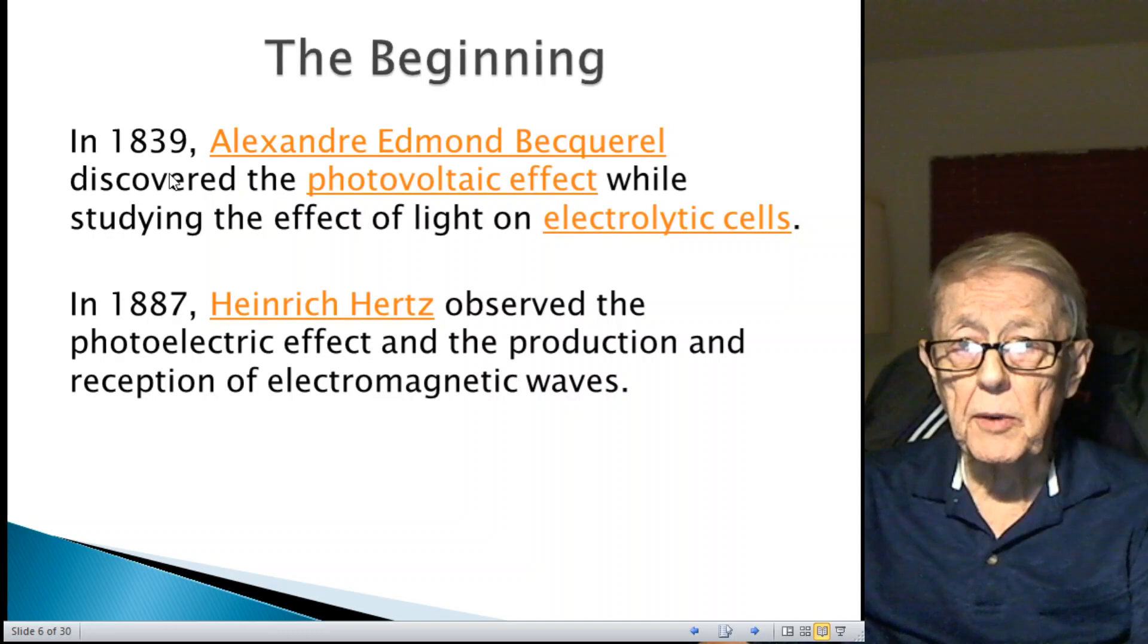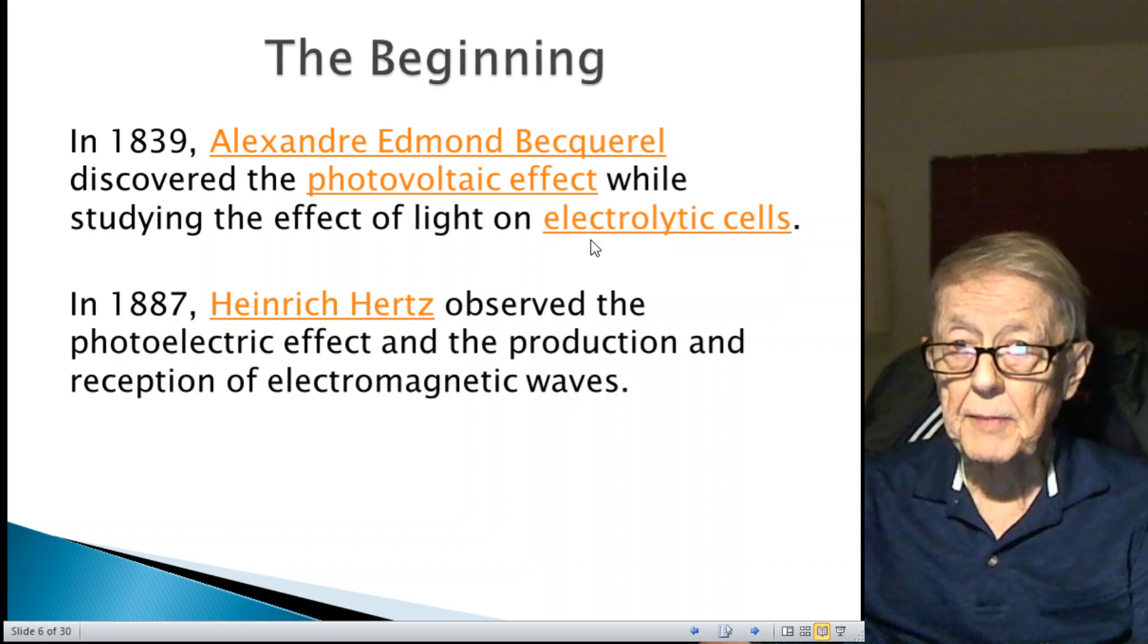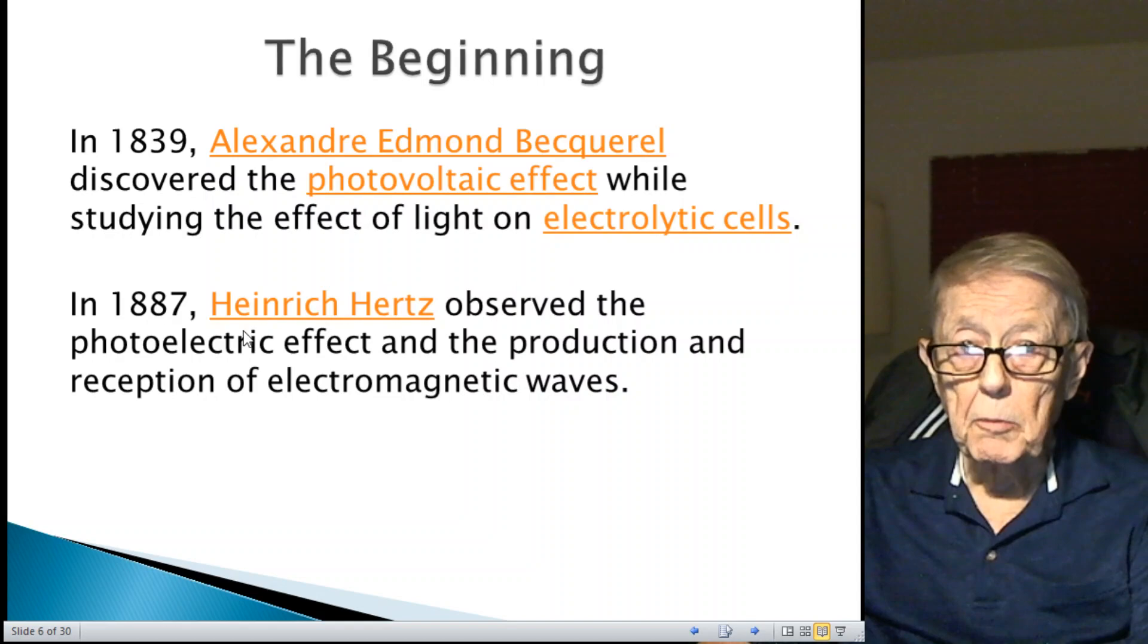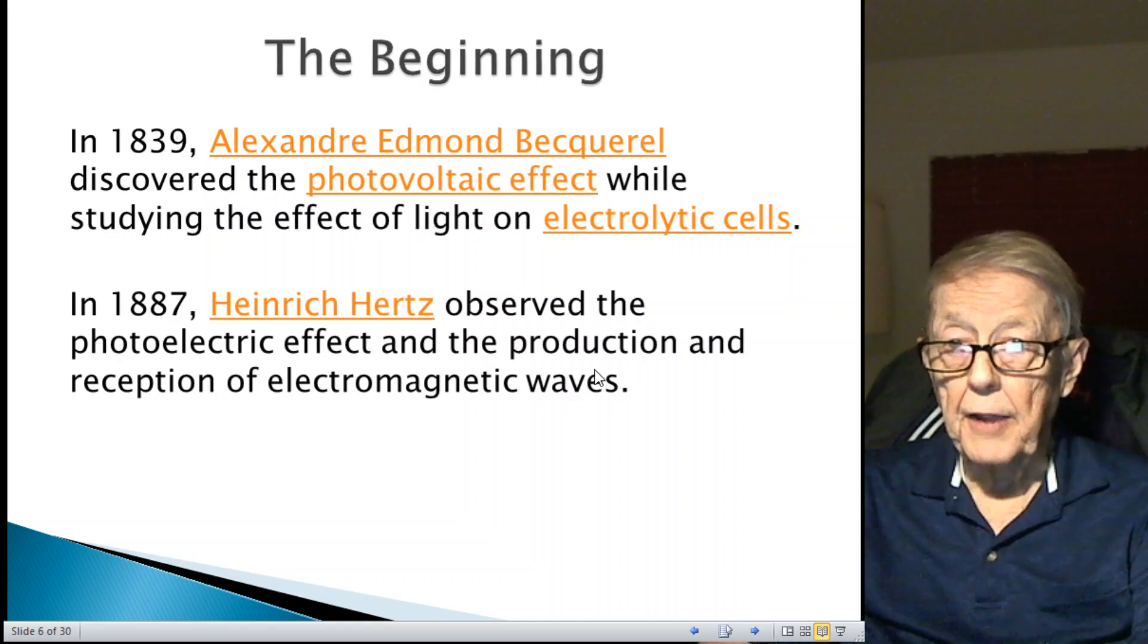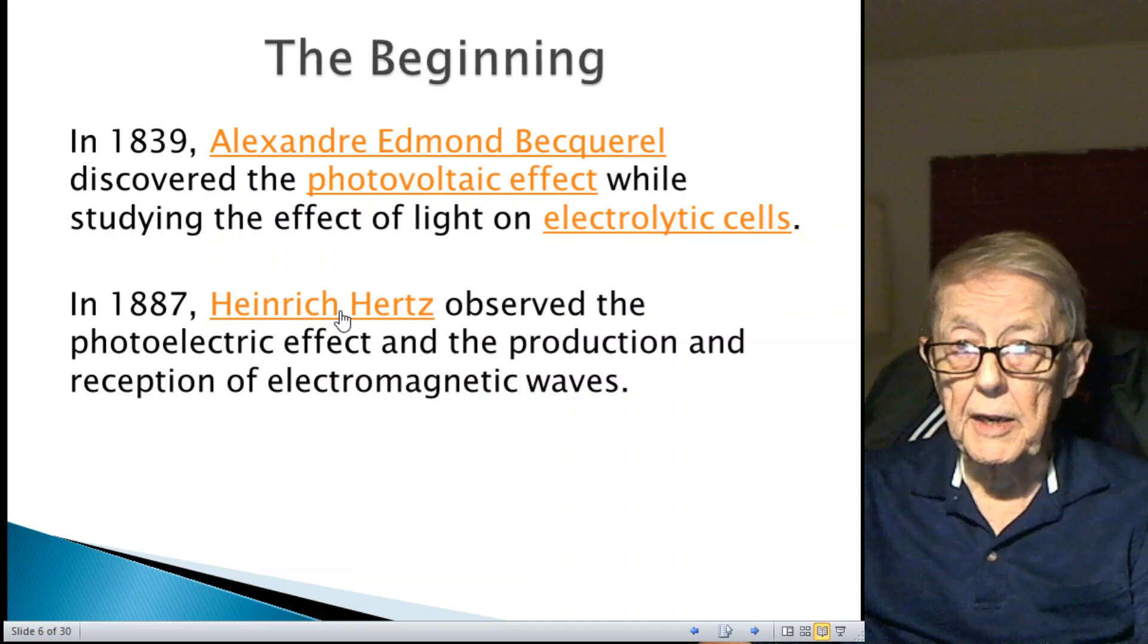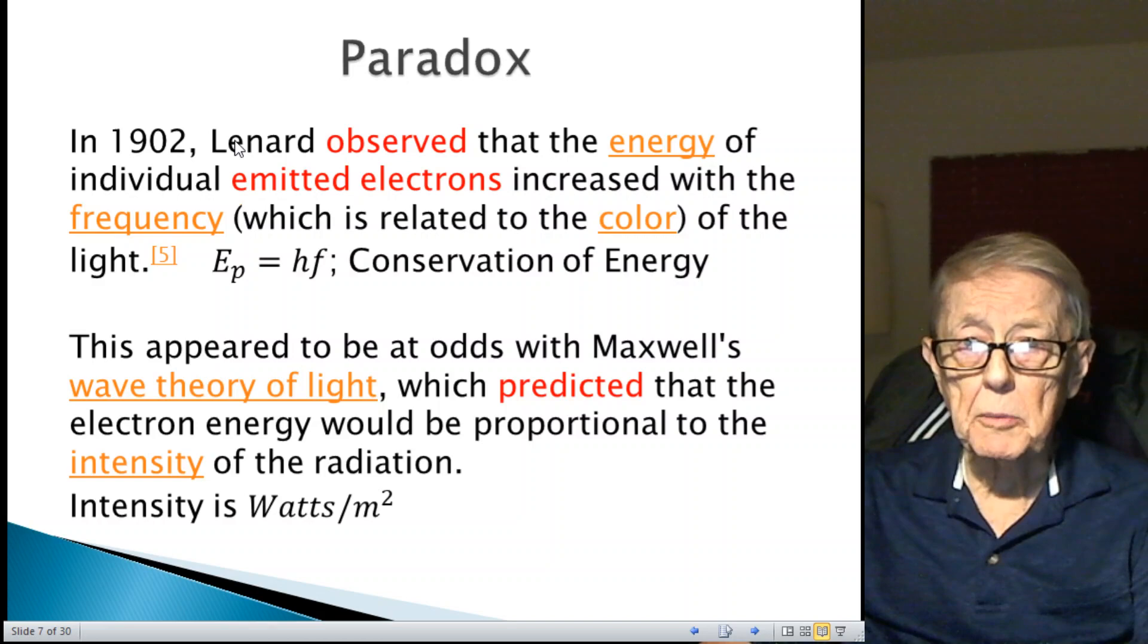This is based on the conservation of energy, and of course a lot of work done testing and measuring things. A little bit of the history. It all started back in 1839 with Alexander Edmund Becquerel, who discovered the photovoltaic effect while studying the effect of light on electrolytic cells. Apparently shone light on the cell and observed the fact that the electrons were emitted. About 50 years later, Heinrich Hertz observed the photoelectric effect and the production and reception of electromagnetic waves.